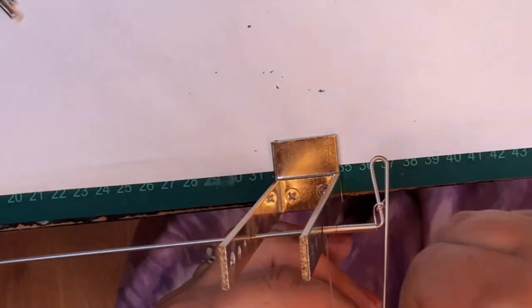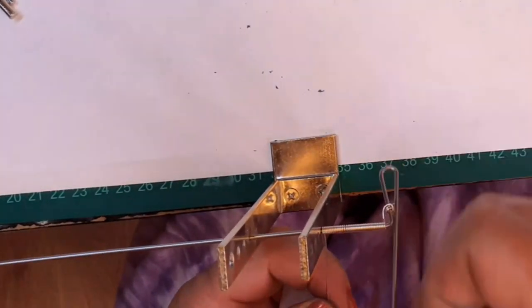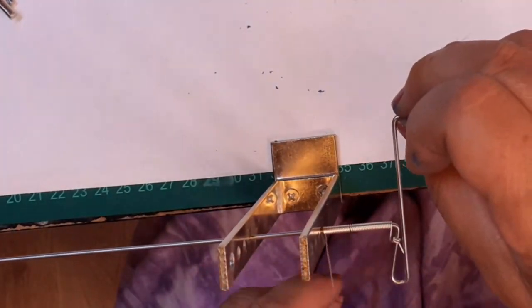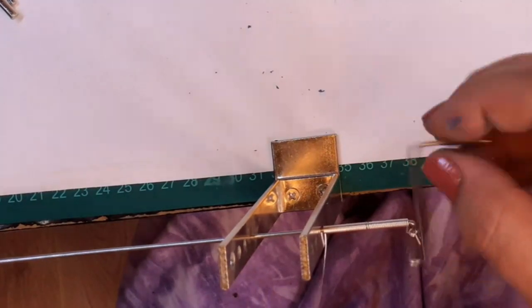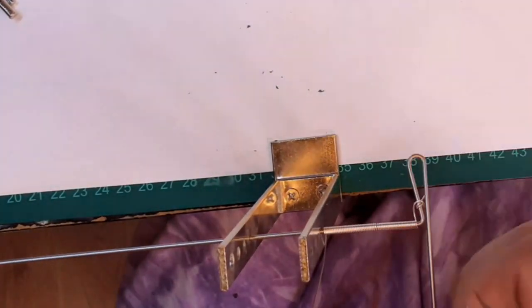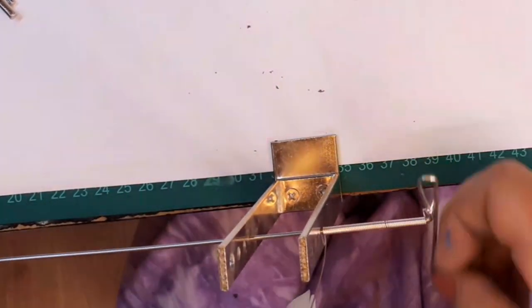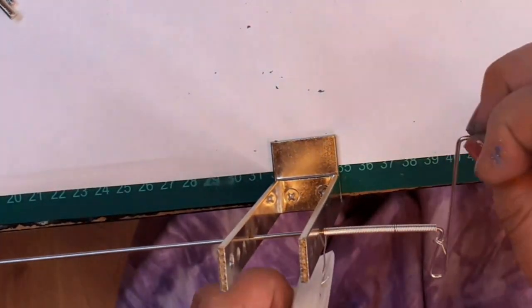The gadget I'm using is called an Artistic Wire Coiling Gizmo. It is brilliant. It makes lovely beads and necklaces. I'll leave a link below where I bought mine. Surprise, surprise eBay. So a cup of coffee would be great.